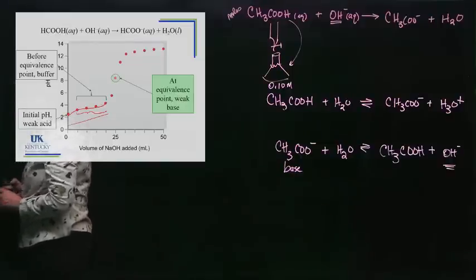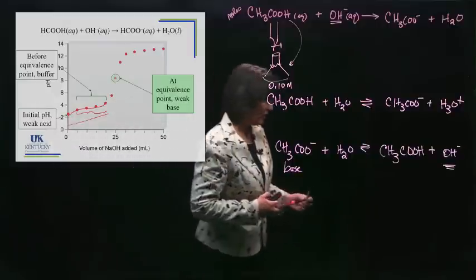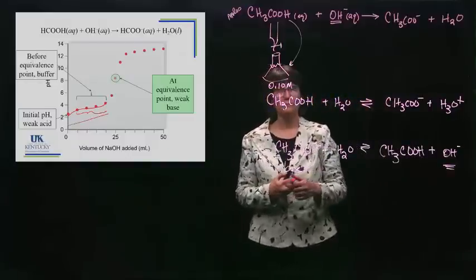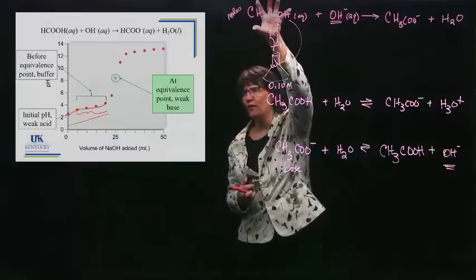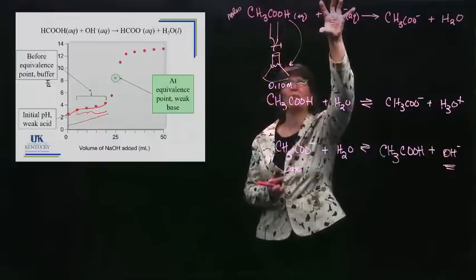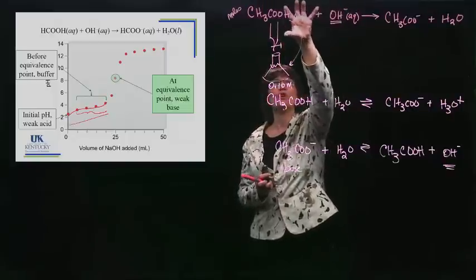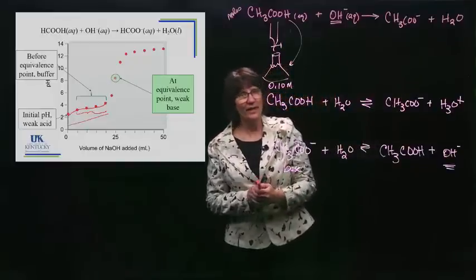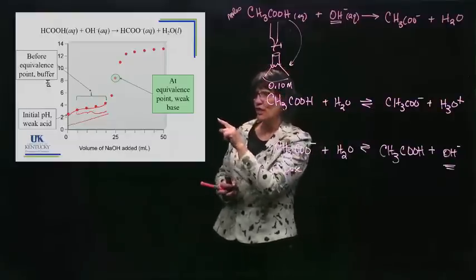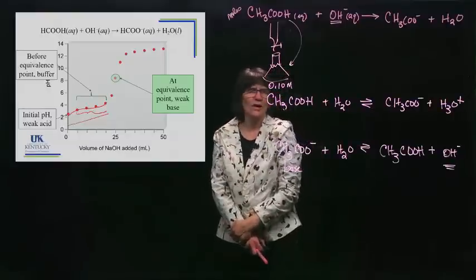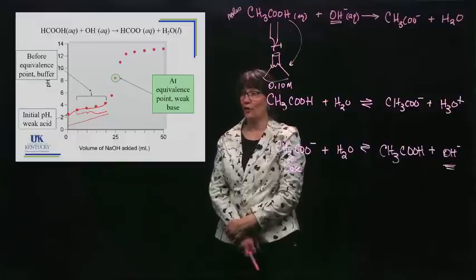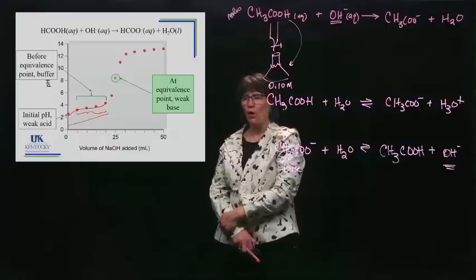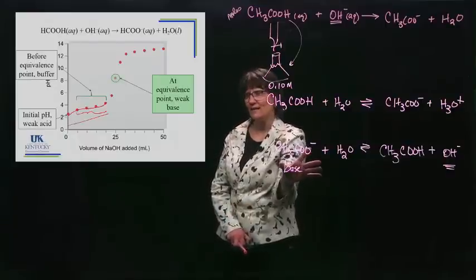Then you're going to hit the equivalence point. Let's go back to the board and see why at the equivalence point the pH would be above 7. At the equivalence point, you've consumed all of the acid and all of the base — by definition, the equivalence point is when you've got equal amounts of those two. What have you turned it into? You've turned it into the acetate ion. What is that? It's a base. What's the pH of a base? It's above 7. There's some work involved to figure out the exact pH at the equivalence point, but you know it's not going to be 7 because you have a base in that solution.